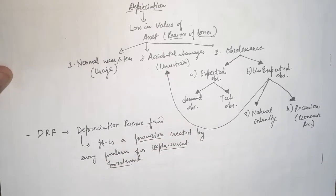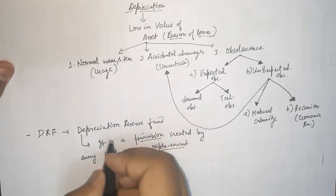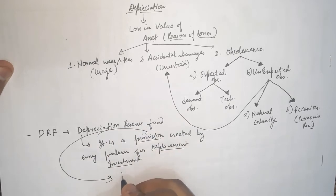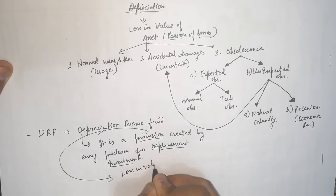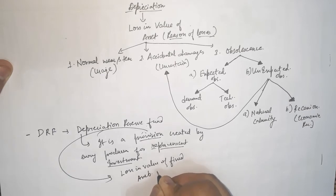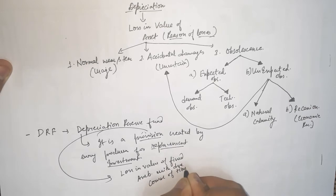Provision refers to the amount which is being set aside for any known liability. That means you know that the liability will arise in the future, so every producer keeps a certain amount out of their profits for that known liability. Here, the known liability is related to the loss in value of fixed assets with the due course of time.